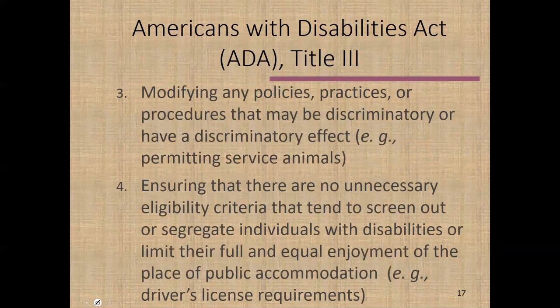A third category is that we may need to modify policies that might have a discriminatory effect. For example, you're probably not going to want animals in your restaurant, and there are likely city codes prohibiting animals in restaurant areas. But if a person has a service animal because of a disability, you have to modify your policy to allow that service animal to be present. That would be an example of an appropriate accommodation under those circumstances.